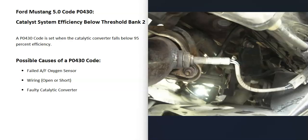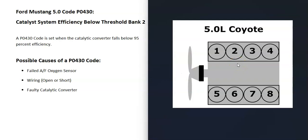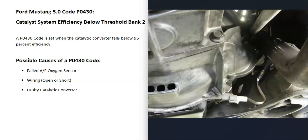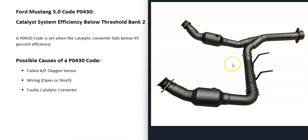V6 and V8 engines have two banks. Bank 1 is always the side of the engine with the number one cylinder, and bank 2 is the opposite side — that's the side the computer is seeing a problem with, so that's the side you want to run the test on. There will be two O2 sensors on each side of the engine: sensor 1 is mounted before the catalytic converter, and sensor 2 is mounted on or right after it.